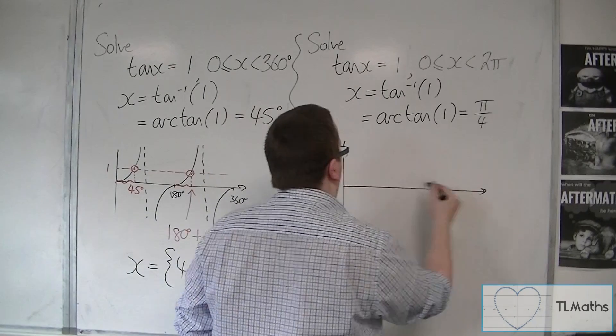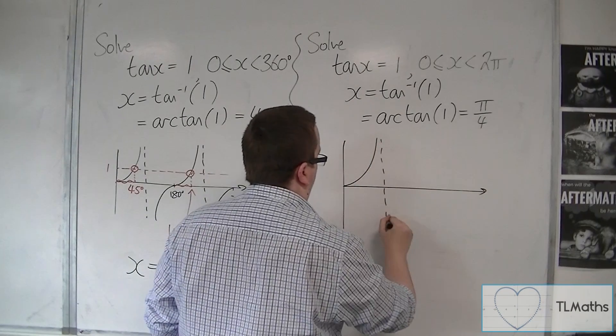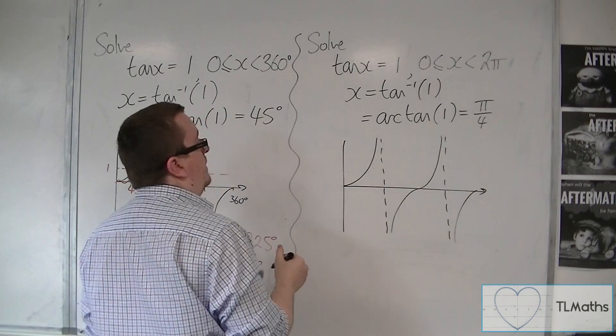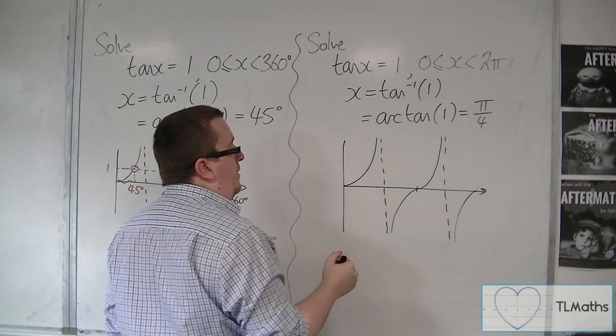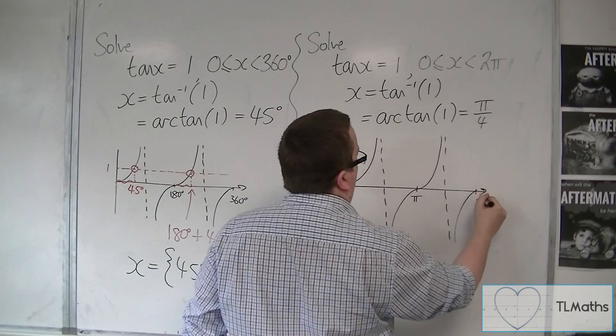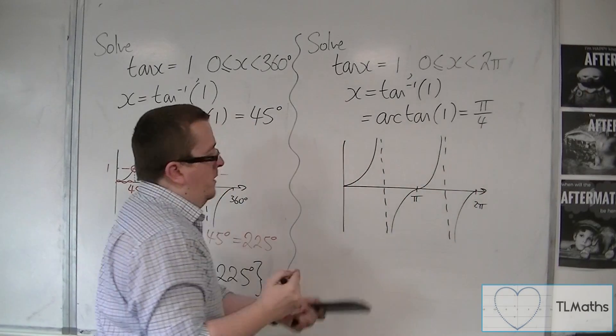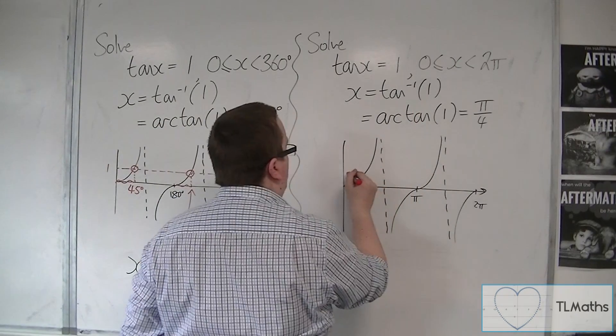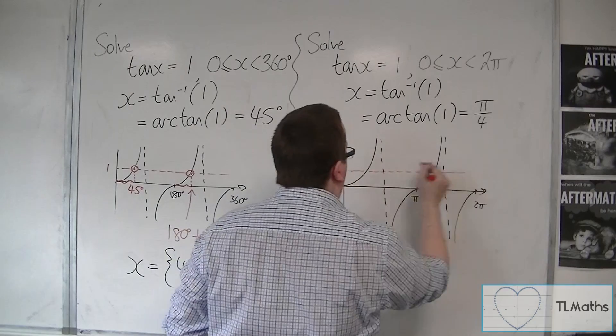I then sketch tan. So there's tan. And let's put a few points on. This would be pi. That would be two pi. So then we draw in a horizontal line to represent one. So that would be that line there.